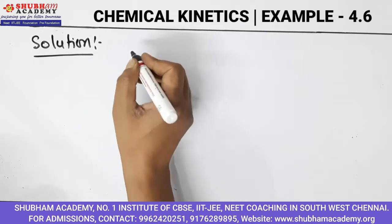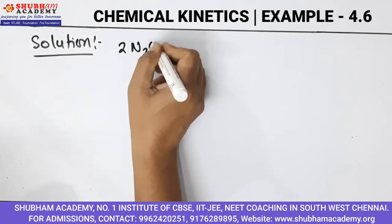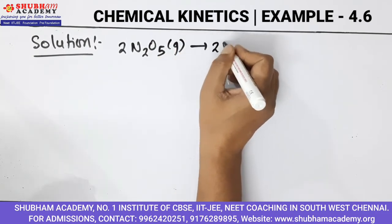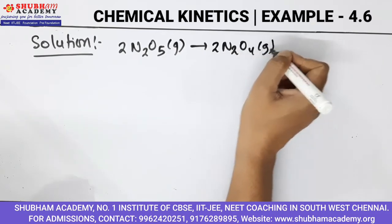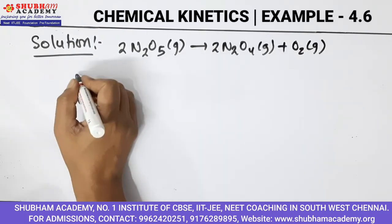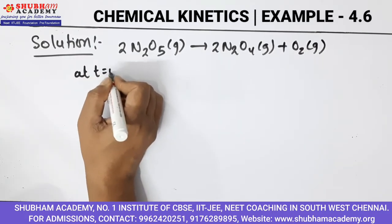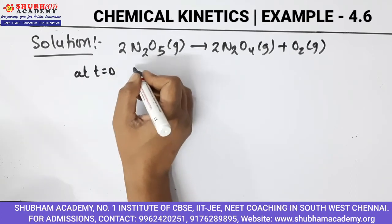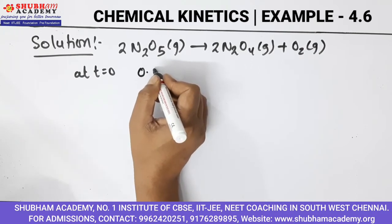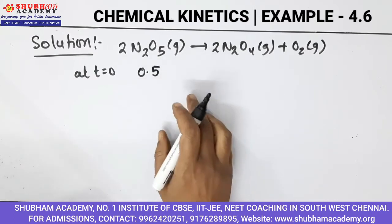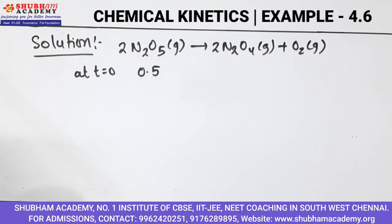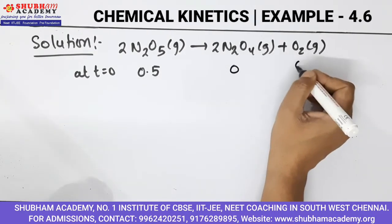Now we will see the solution. The equation given is: 2N₂O₅(g) → 2N₂O₄(g) + O₂(g). At t equals 0, the partial pressure of N₂O₅ was 0.5 atm. Since at t equals 0 no product was formed, the pressures of N₂O₄ and O₂ are both 0, and this is also the total pressure.